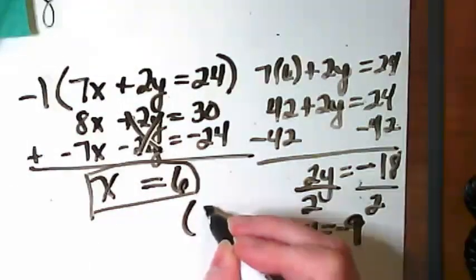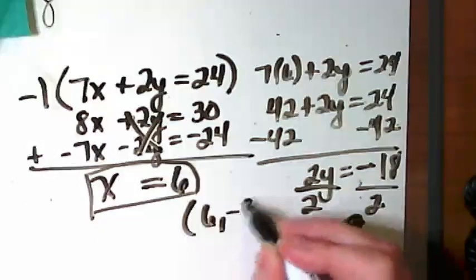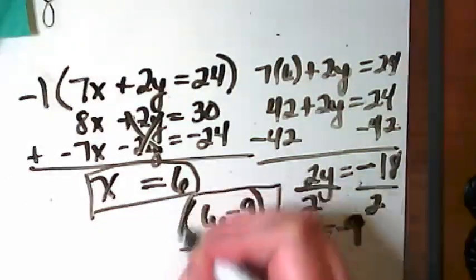So my xy pair is x is 6, y is negative 9, and there's my solution.